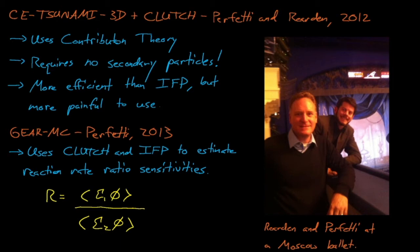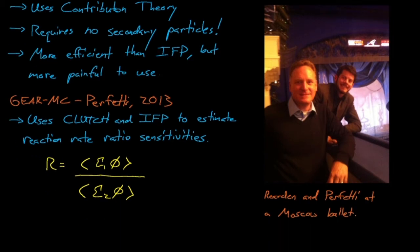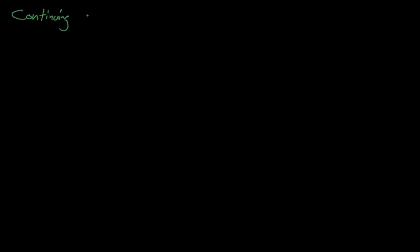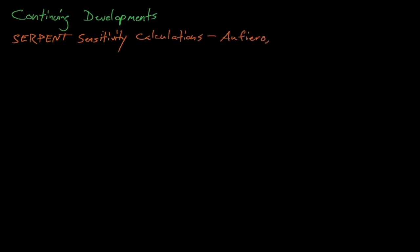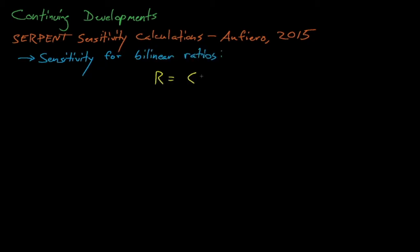In 2015, Alfiero, a postdoc at Berkeley, developed eigenvalue and reaction rate sensitivity methods in the Serpent Monte Carlo code, which has the added challenge of using Woodcock tracking. Alfiero also developed a method for estimating the sensitivity of bilinear ratios, which includes all sorts of adjoint-weighted kinetics properties.